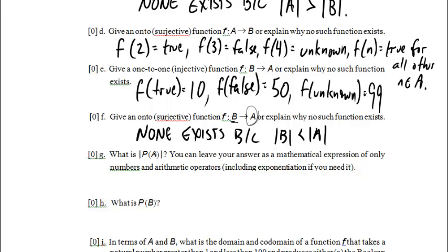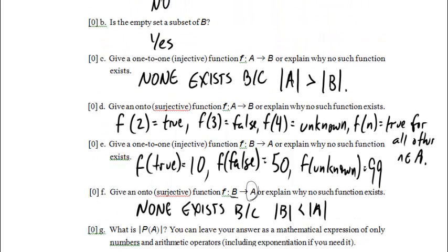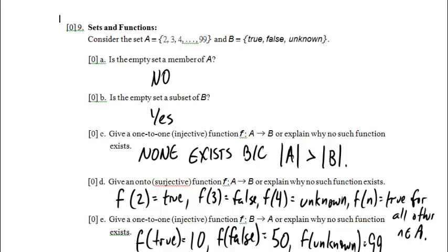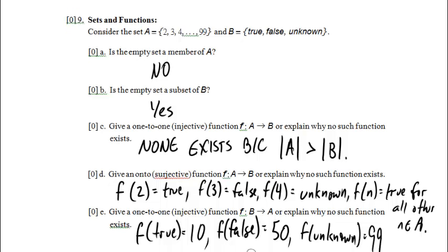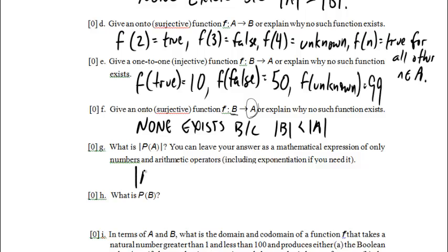What is the cardinality of the power set of A? Well, the cardinality of A is, be careful everyone. If it was 1, 2, 3, 4, dot dot dot, 99, then it would have 99 elements in it, just like if it was 1, 2, 3, 4, it would have four elements. But it's missing one, so it actually has one fewer element than that, so the cardinality of A is 98. And the cardinality of the power set of a set is 2 to the cardinality of that set, so this is going to be 2 to the 98th, and thank goodness we do not have to write it because that would take forever.